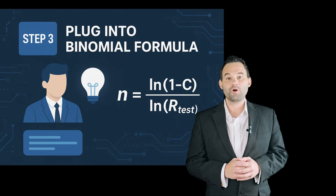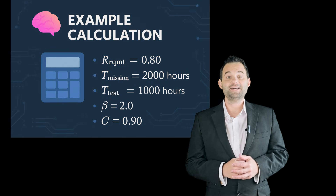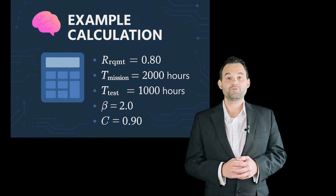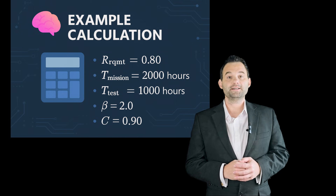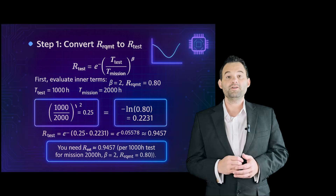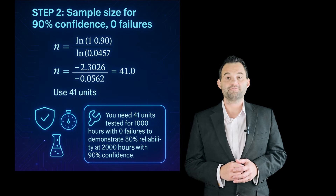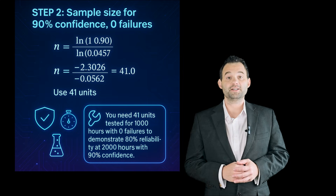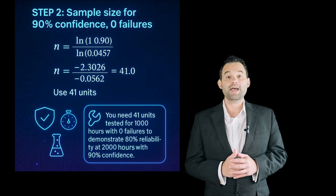Step 3: plug into the binomial formula as pictured. Let's walk through an example calculation. Given: R-requirement = 0.80, T-mission = 2,000 hours, T-test = 1,000 hours, beta = 2.0, and confidence C = 0.90. Step 1: perform the conversion as pictured, evaluating the inner terms. Step 2: sample size for 90% confidence with zero failures. As you can see, you need 41 units tested for 1,000 hours with 0 failures to demonstrate 80% reliability at 2,000 hours with 90% confidence.